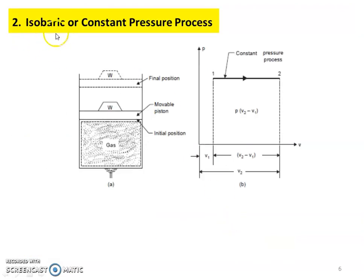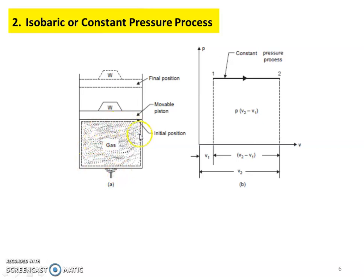The next process is the Isobaric Process or Constant Pressure Process. In the piston-cylinder arrangement, the piston is movable and can move up and down. Initially, pressure is P1 and volume is V1. Heat is added and pressure remains constant, so the piston moves upward to maintain constant pressure. This brings the system to its final position — an expansion where P1 equals P2.